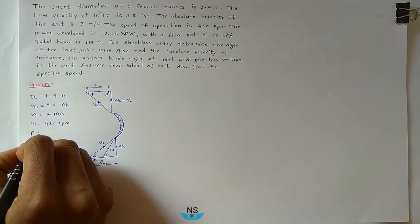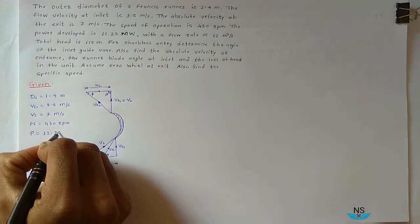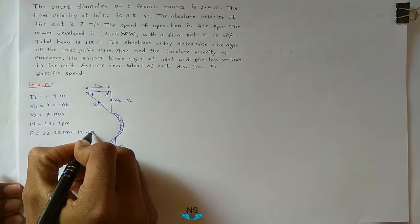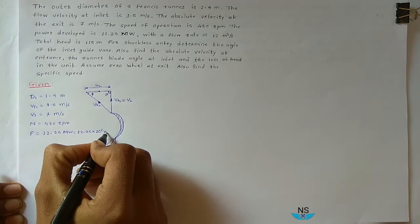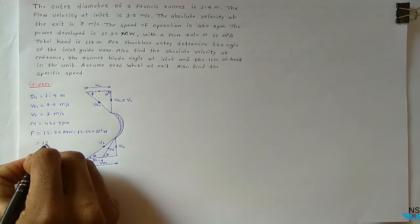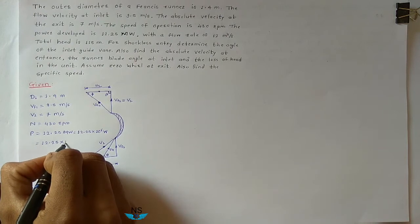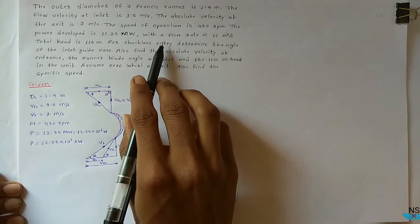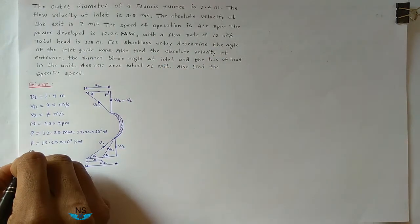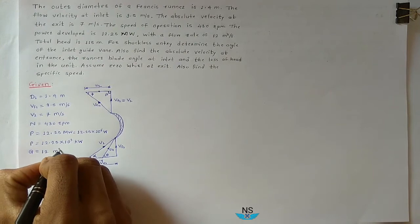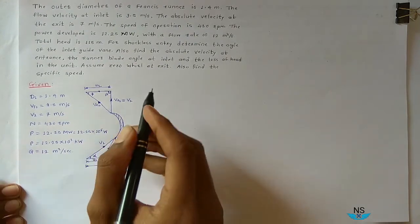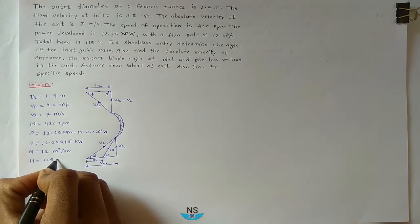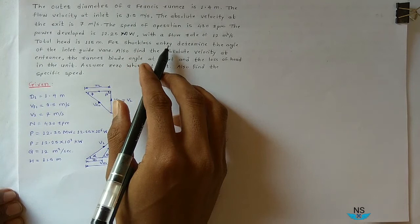The Power Developed, that is Shaft Power, is 12.25 Megawatt, equal to 12.25 × 10⁶ Watt, or 12.25 × 10³ Kilowatt. The Flow Rate Q is given as 12 meter cube per second. Total Head H is given as 115 meter. For Shockless Entry.